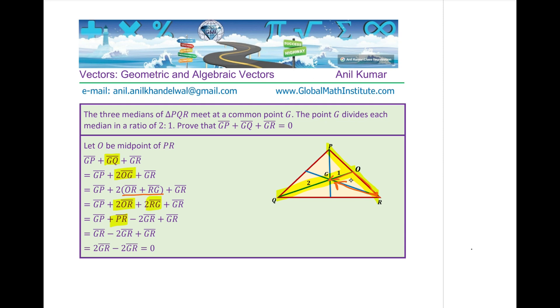On the other hand, we reverse the direction of the vector RG, wrote it as GR with a negative sign. Now, the combination of GP and PR is GR. So we have 2GR minus 2GR, which will give us 0. So I hope that makes absolute sense.